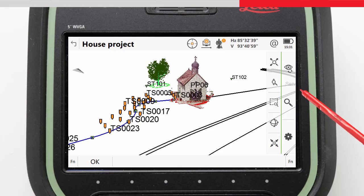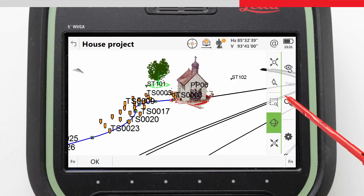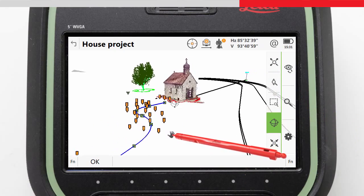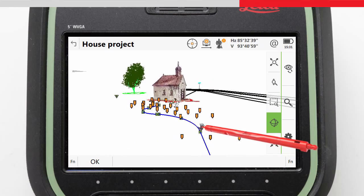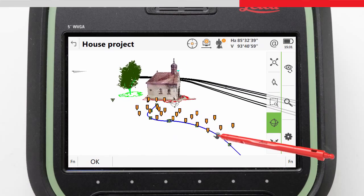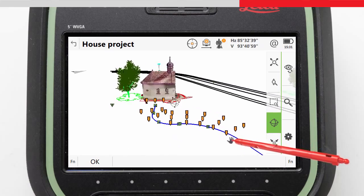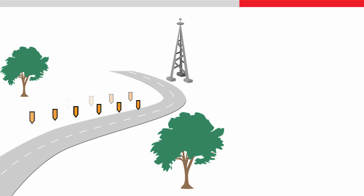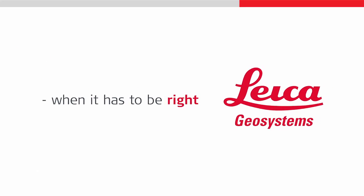We have seen in this video how to stake a line with a slope, and had an overview of the powerful features and settings available in the Stake to Line app. Other videos will continue with this house project to show staking a line or a segment of a line, and also staking a grid of points, all using the Stake to Line app. Thanks for watching.